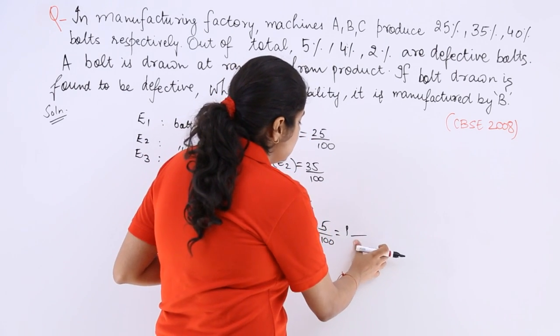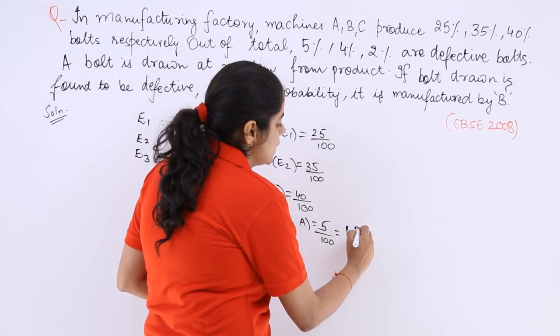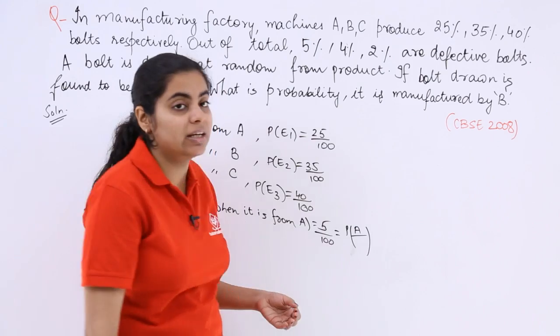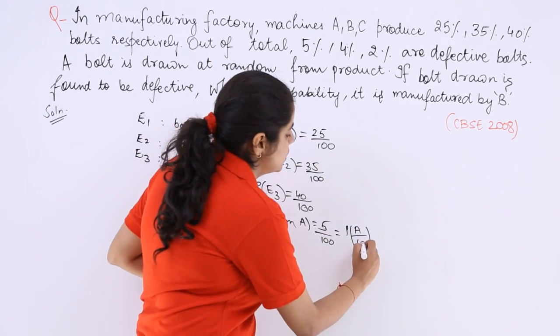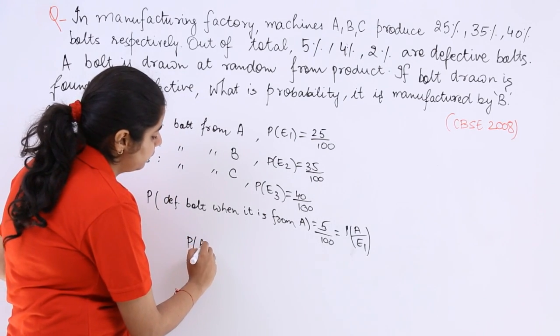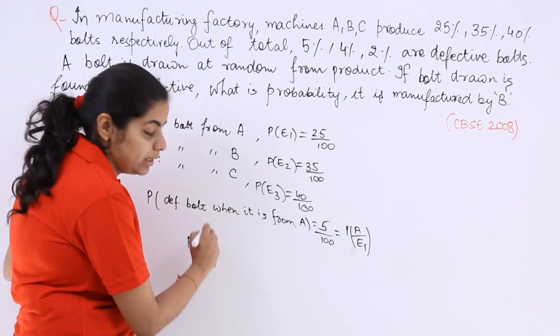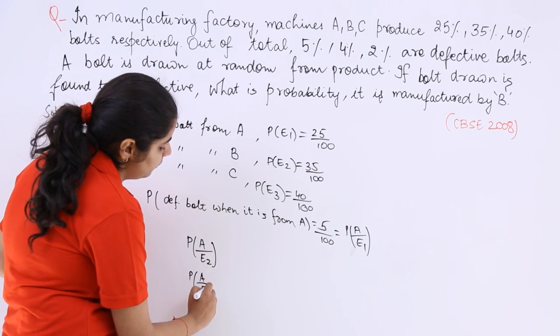From A means you are going to see that since it is defective, let me write. A is the point which is defective, and in the denominator it is to be from machine A, which is E1. Similarly if I say it is defective with respect to machine B, and similarly defective with respect to machine C.